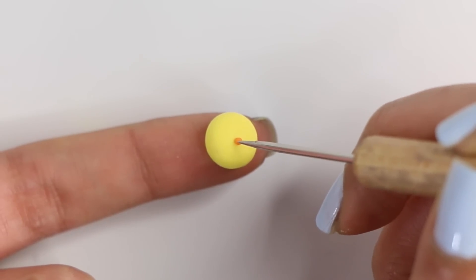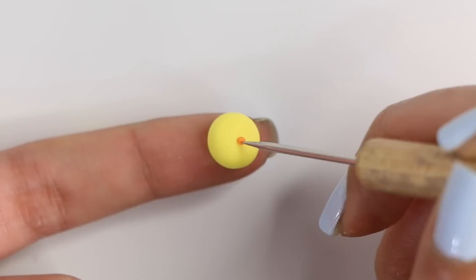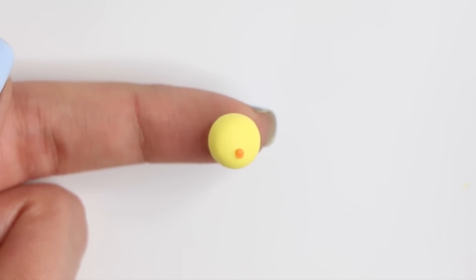Now that I have the beak in place I'm going to make a small little hole or an indent and that's basically kind of like the mouth for the little chick.